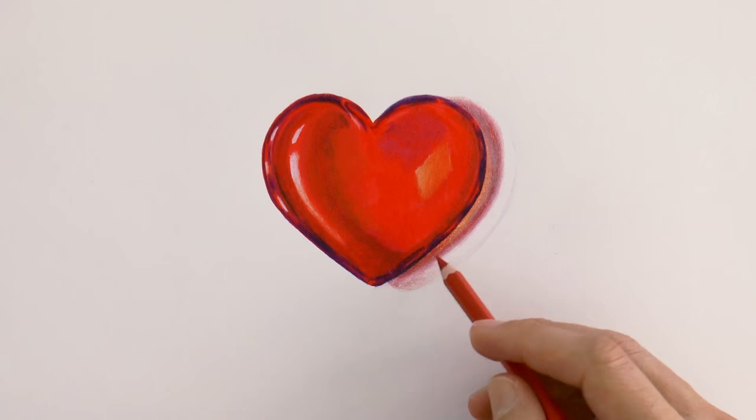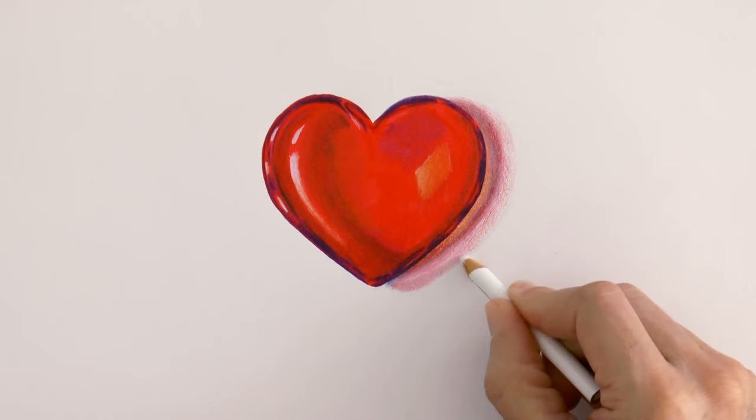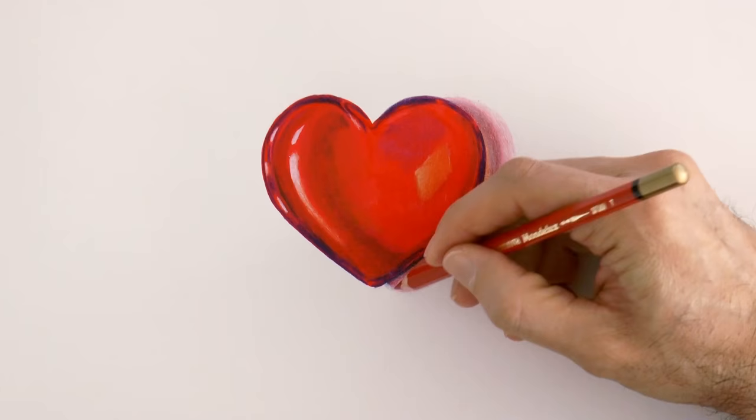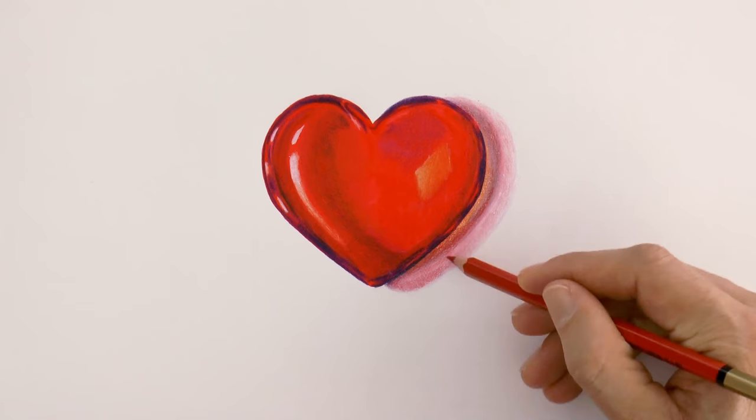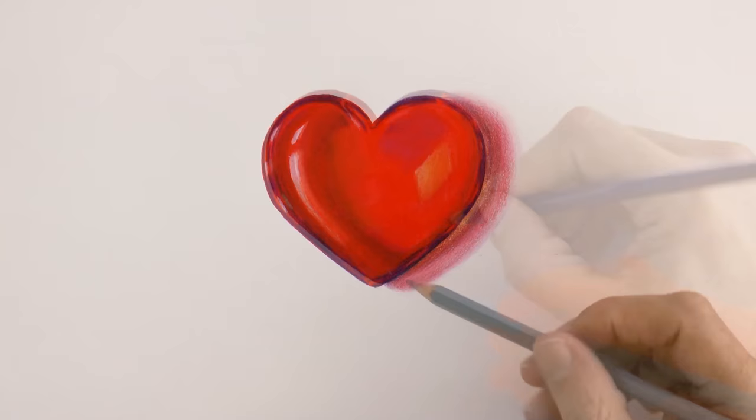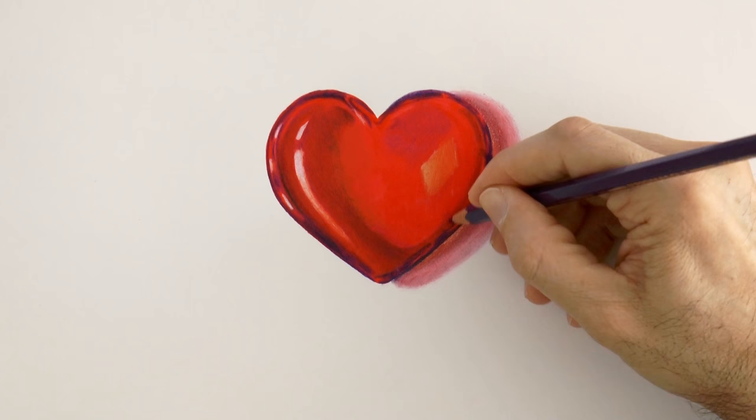Sometimes it is tricky when you are drawing with colored pencils to do the shadow, especially the edge, so that it comes slightly blurred as it should be. What I did in this case to solve that was to draw with white on the edge of the shadow. That softened it a little bit and I think it looks alright.